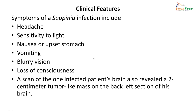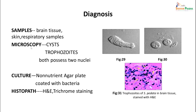Infections involving the brain can be fatal and are often diagnosed late, though the only reported case was not fatal and was treated successfully. Symptoms include headache, sensitivity to light, nausea, vomiting, blurry vision, loss of consciousness, and a scan may reveal a tumour-like mass in the brain. For diagnosis, tissue samples from brain, skin, or respiratory sources are needed to demonstrate cysts and trophozoites — both possessing two nuclei. They can be grown on non-nutrient agar plates coated with E. coli, where clearing of culture the next day indicates the organism's presence.